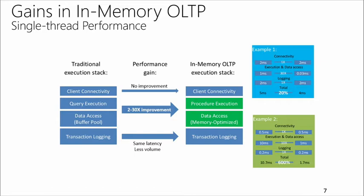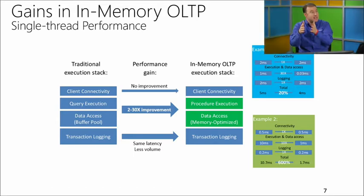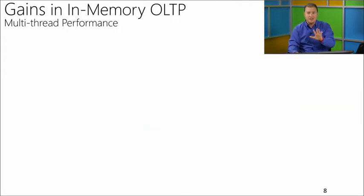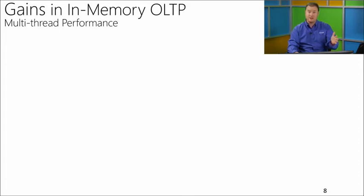For a single execution, understanding where your time is spent is critical. If you have a significant amount of time being spent in query execution and the data access path — those are the components that the in-memory OLTP engine can address. I want to talk now about multi-thread performance, and how that relates to concurrency, latching, blocking — some of those typical barriers to scale.